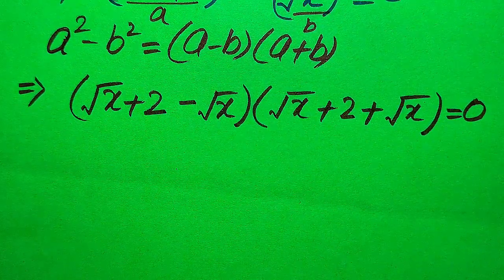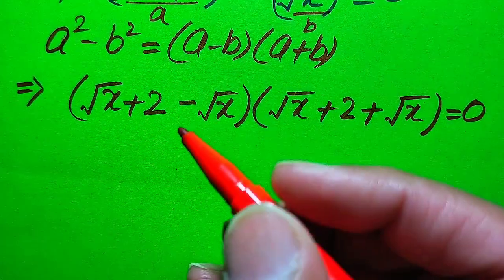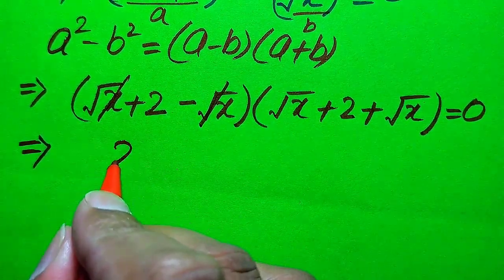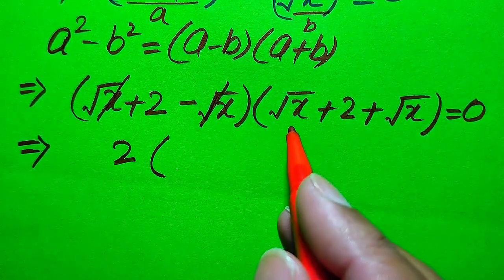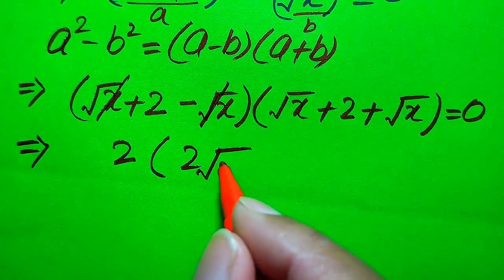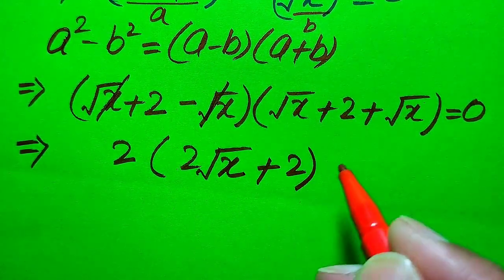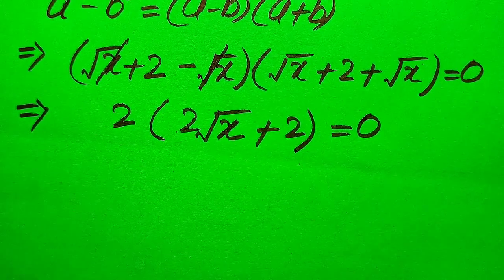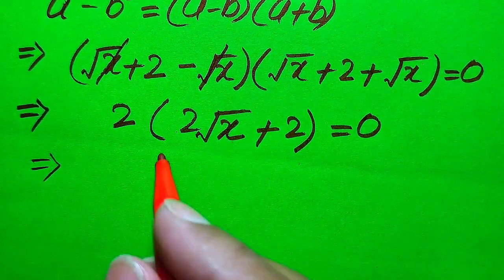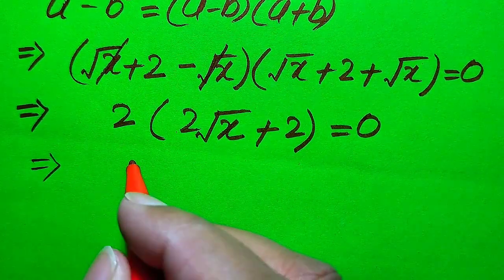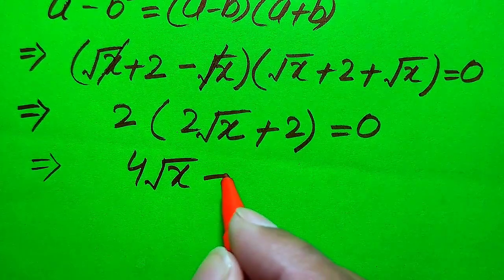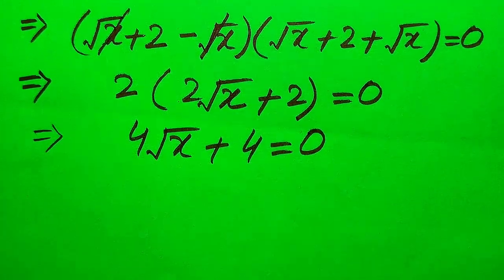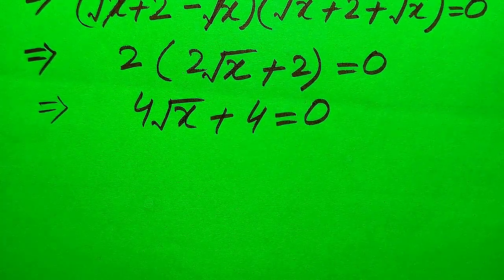Further simplification: the minus square root of x and plus square root of x cancel each other out, leaving 2. And the square root of x plus square root of x becomes 2 times square root of x. So we get 2 times (2 times square root of x plus 2) equals zero. We multiply these two terms separately: it becomes 4 times square root of x plus 4 equals zero.